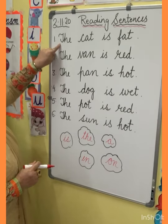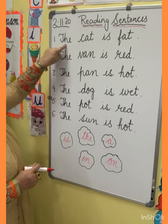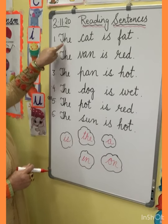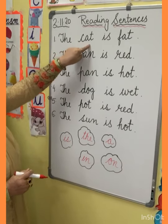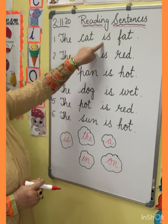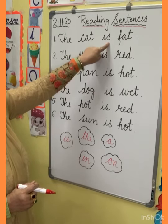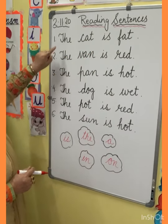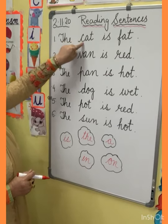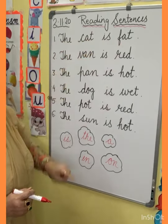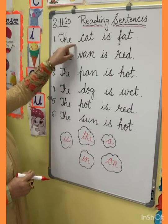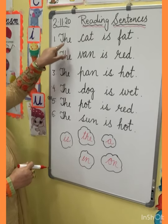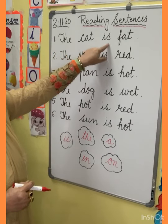Look at the board. First, which letter is this? T — T and H and E. When we say them together, this is called 'the'. T-H-E, the. Now read this sentence: The cat is fat. The cat is fat.